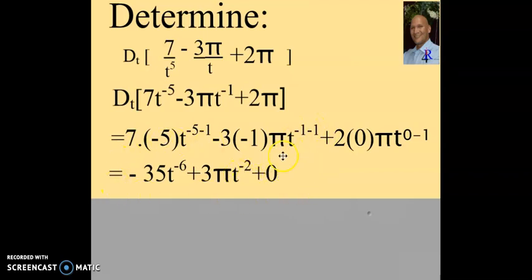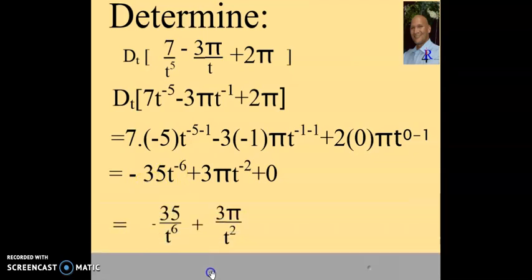Now, I must remember to write my exponents as positive exponents, which means I will have to throw them underneath the line. So, this becomes 1 over t to the power of 6, which will be negative 35 over t to the power of 6.